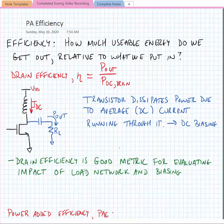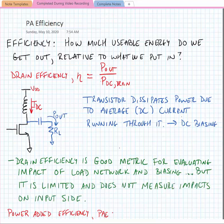The drain efficiency is a good metric for evaluating the impact of the load network and biasing on the performance of an amplifier. But it's a limited metric and does not measure the impacts on the input side. For instance, what is the gain of the amplifier and what do I have to do to drive the amplifier?